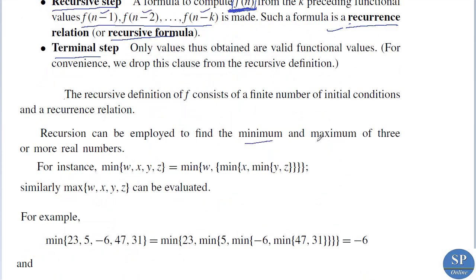Recursion can be used to find the minimum and maximum of three or more real numbers. For instance, the minimum of {w, x, y, z} can be written as min(w, min(x, min(y, z))). That means to find the minimum of four real values, we first find min(y, z), then min(x, min(y,z)), and finally min(w, that result). Similarly we can find a formula for the maximum of w, x, y, z.